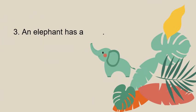Number three: An elephant has a dash. What do we call the long nose of an elephant? Yes — a trunk. An elephant has a trunk.